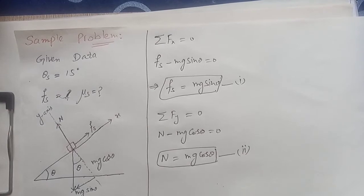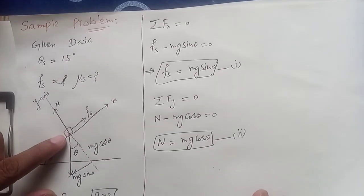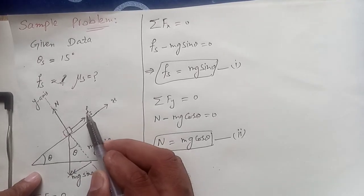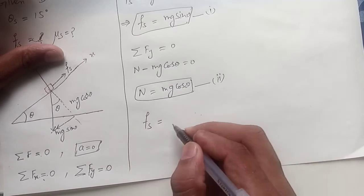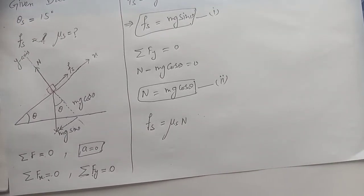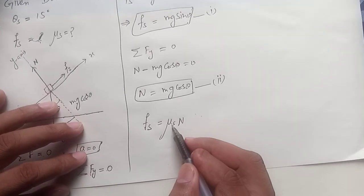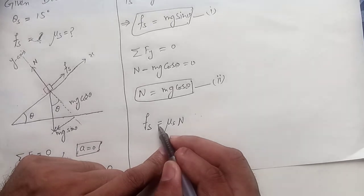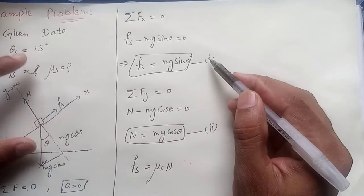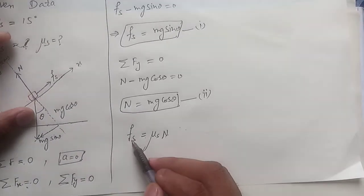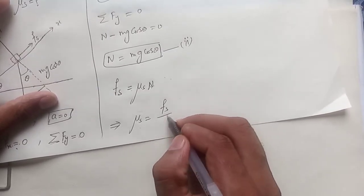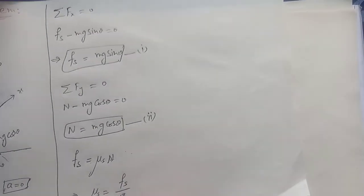According to the statement, the block is just about to move. When the block just starts its motion, static friction is at its maximum value, given by Fs equals mu s times N. Since we have calculated Fs and N, we can simplify: the coefficient of static friction mu s equals Fs over N.